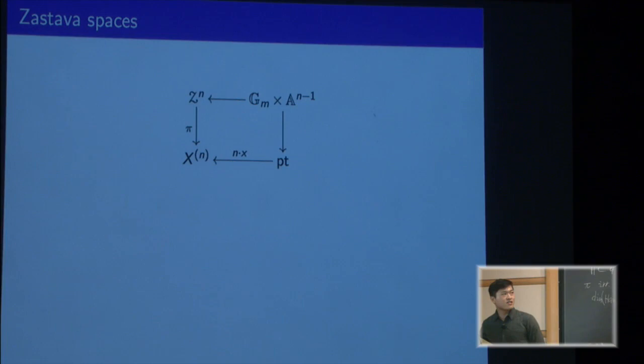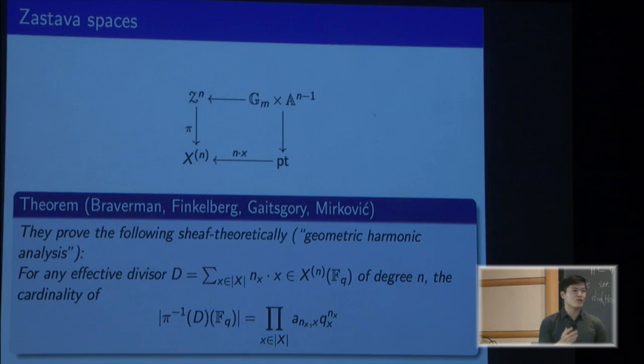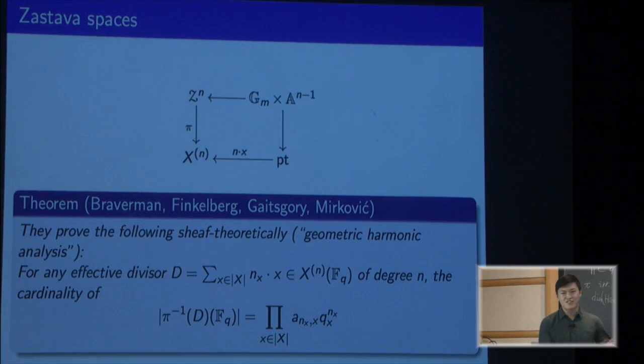I'm going to go straight to the theorem, which relates these functions a_n that I defined before with this space. This is multiple works by Braverman, Finkelberg, Gaitsgory, and Mirković. The main point is that they don't actually use the formulas that I described before. They do everything sheaf theoretically. This can be thought of as a kind of geometric harmonic analysis. I'm just going to state it in this function-theoretic format.